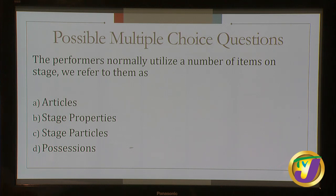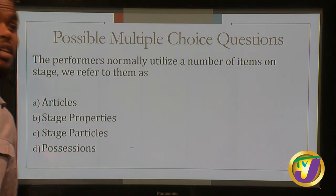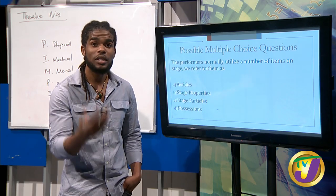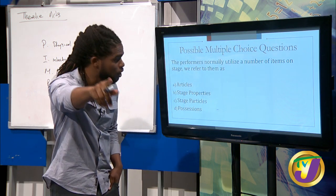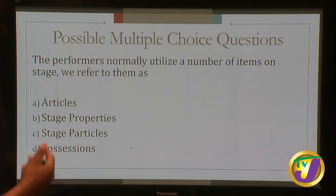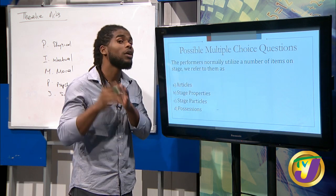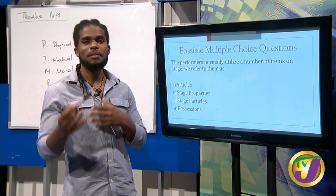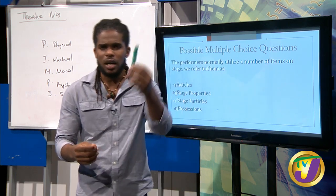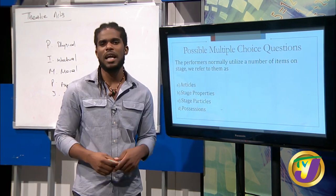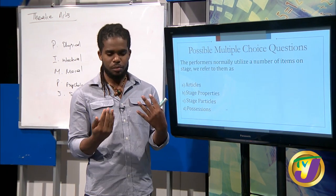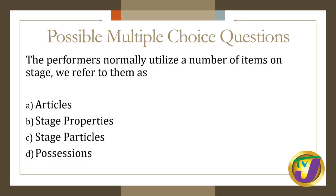Question five: performers normally utilize a number of items on stage — we refer to them as? The answer is stage properties. Props is the short name for stage properties — these are moveable items actors use, like a cell phone, a knife, a bag. Items that are fixed on the stage represent the set.